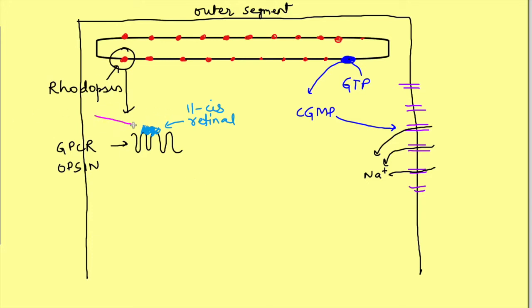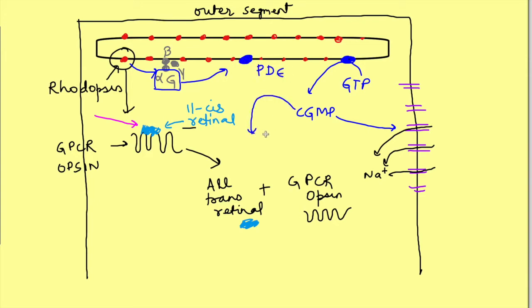When the photon strikes this rhodopsin, photon is absorbed by 11-cis retinal which then gets converted into all-trans retinal. Now, with the conversion of 11-cis retinal to all-trans retinal, it detaches from GPCR opsin and due to this opsin also changes conformation and there is activation of trimeric G-proteins known as transducin. The G-alpha part of transducin activates the enzyme phosphodiesterase which breaks down cGMP to 5-GMP thus reducing the concentration of cGMP inside the cell.